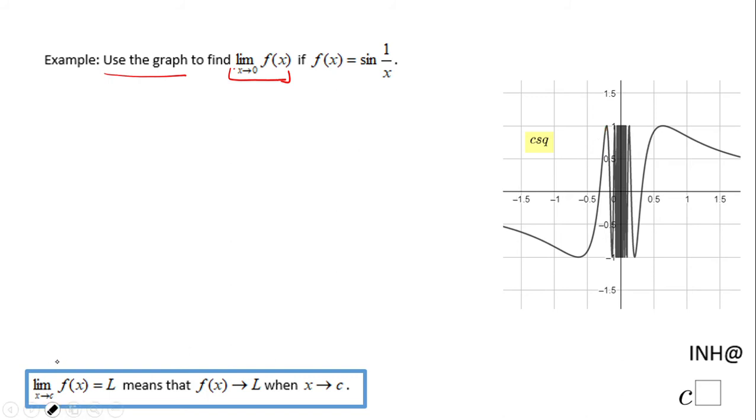This limit does not exist because this function oscillates when you get closer and closer to zero. So the limit does not exist because this function oscillates.